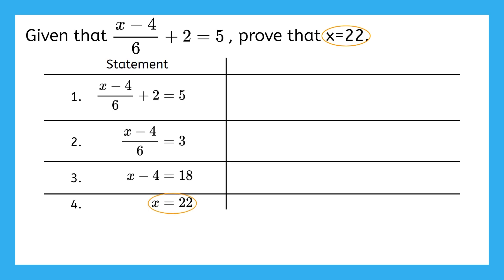The column on the right gets labeled reason. This is where we'll put our justification for each step. Each of our reasons should be either given or a property. For now, you have all of the properties you need in your property review activity. Okay, let's take this one step at a time.